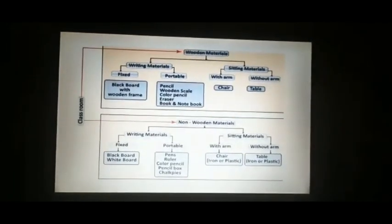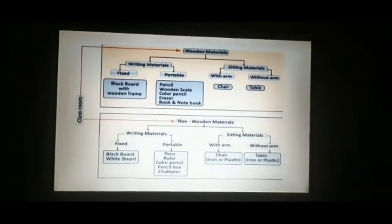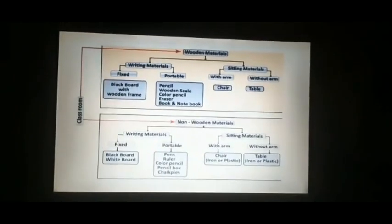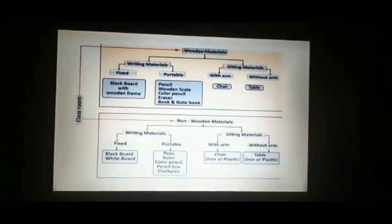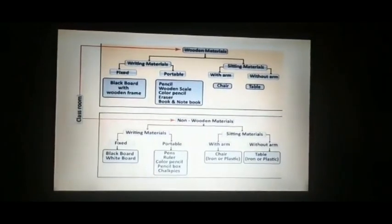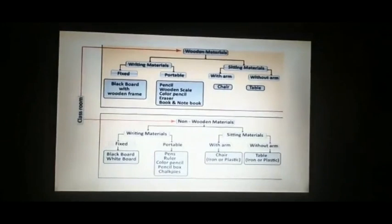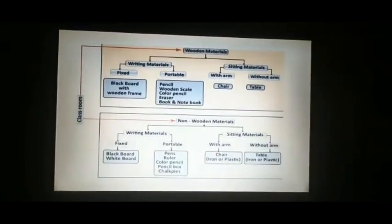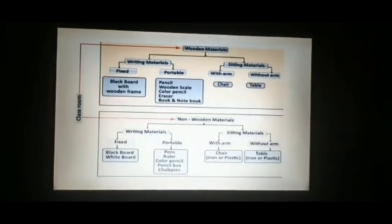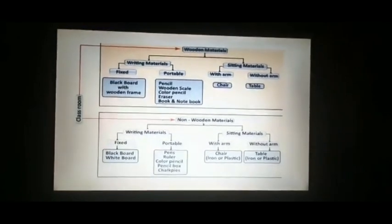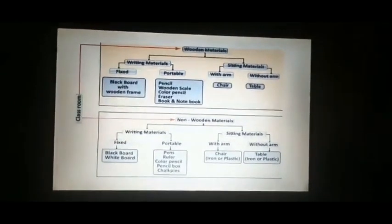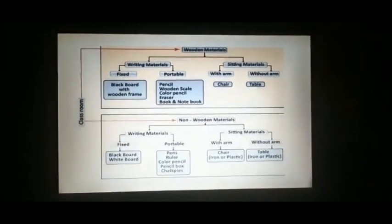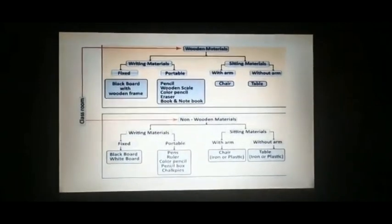In non-wooden writing materials — fixed and portable. Under fixed: blackboard and whiteboard. Under portable: pens, ruler, color pencil, pencil box, chalk pieces — these are non-wooden portable materials. Then under non-wooden sitting materials, chair comes under 'with arm' — that is iron or plastic chair, a non-wooden material. Iron or plastic table comes under 'without arm.' So like this, we can classify things for quicker and easier work.